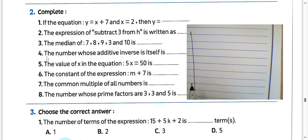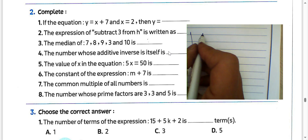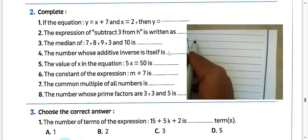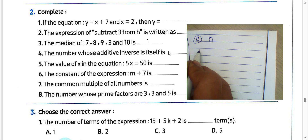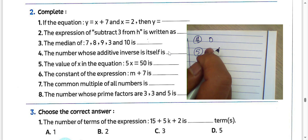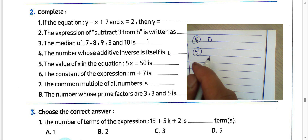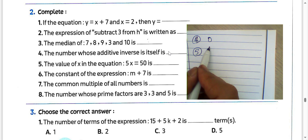Question number 4: the number whose additive inverse is itself — it will be 0. Zero is neither positive nor negative, so you must write 0.